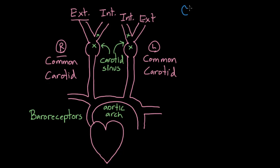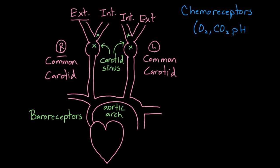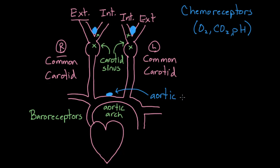In this video, we're actually going to focus on chemoreceptors. Chemoreceptors are also important in giving us information, but they give us information about things like oxygen levels, carbon dioxide levels, and pH of the blood. These chemoreceptors are located in a similar region, but not exactly the same region as the baroreceptors — slightly different locations.